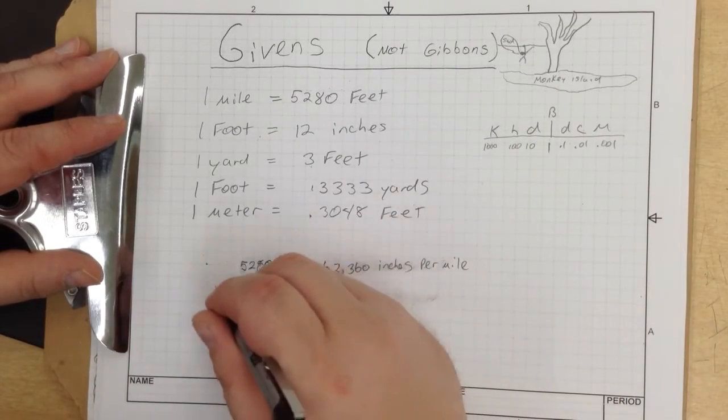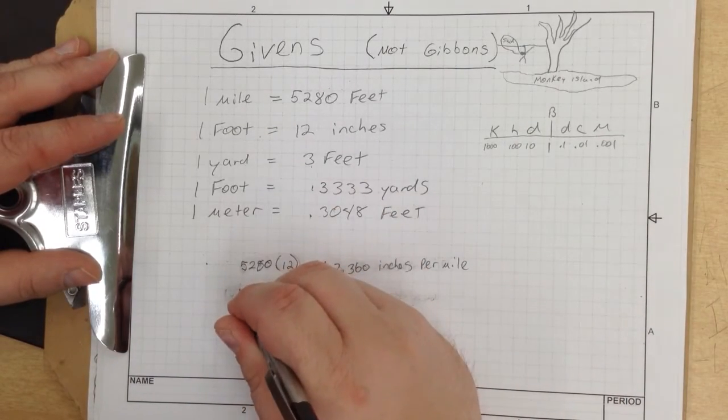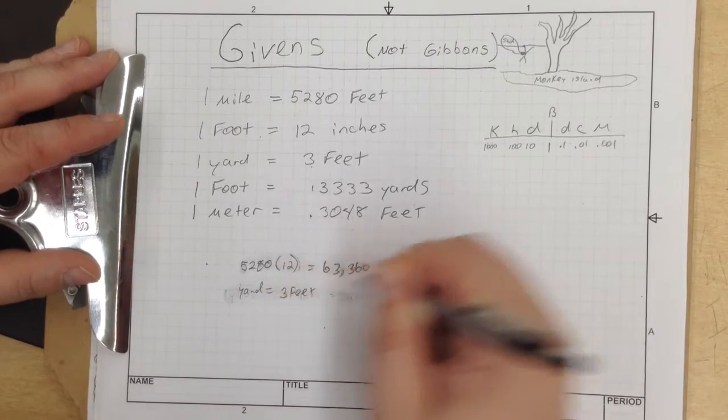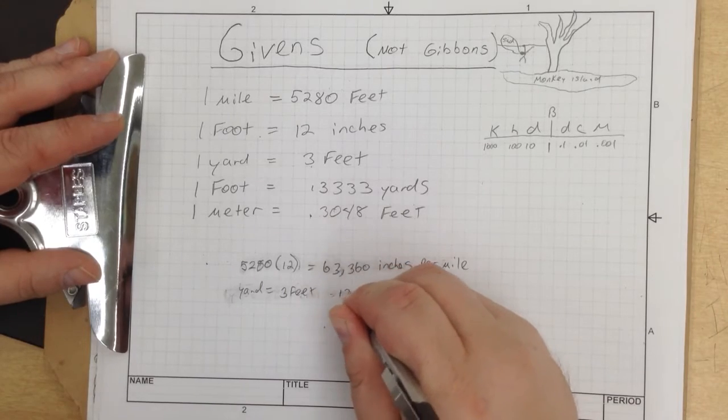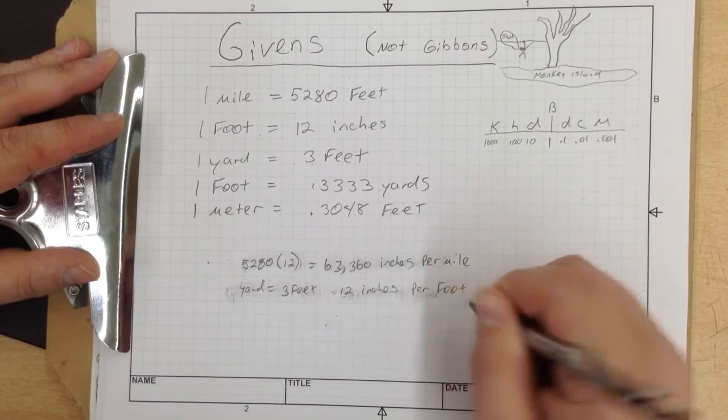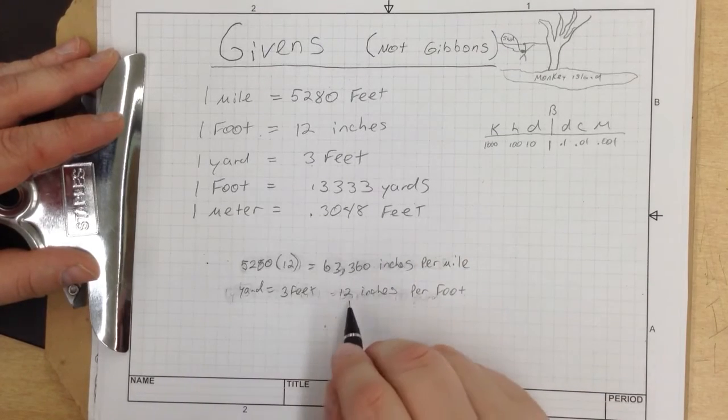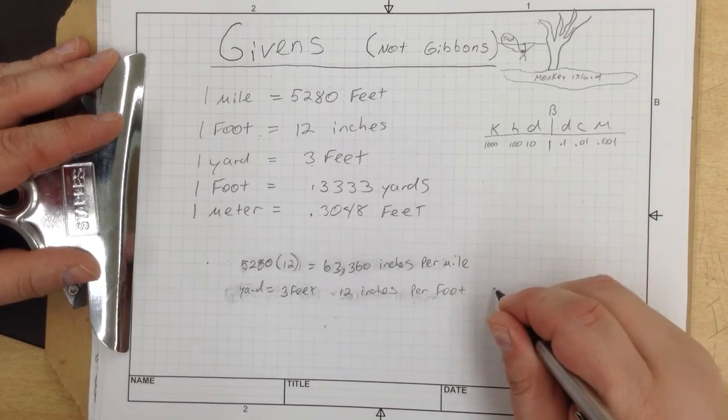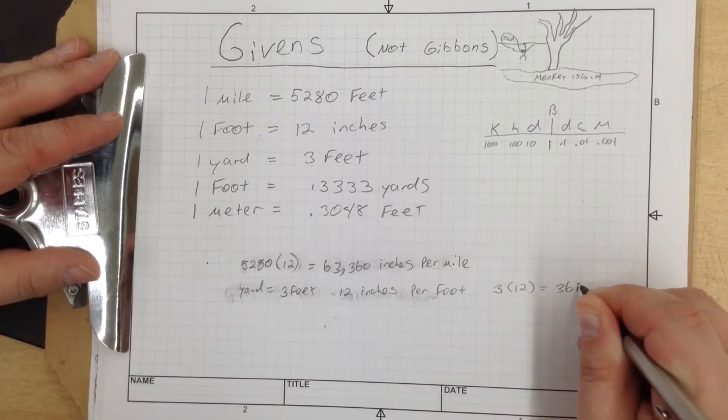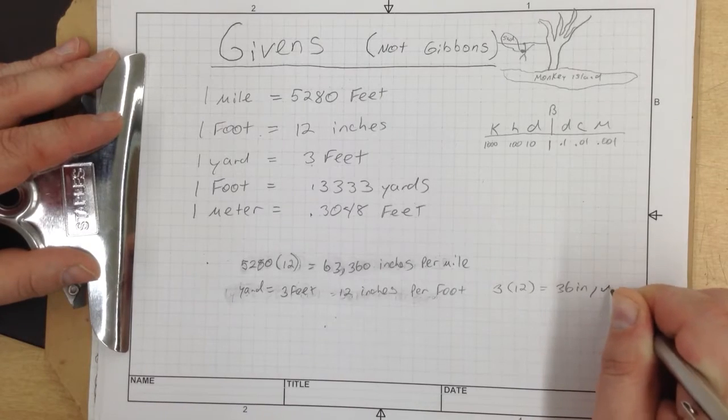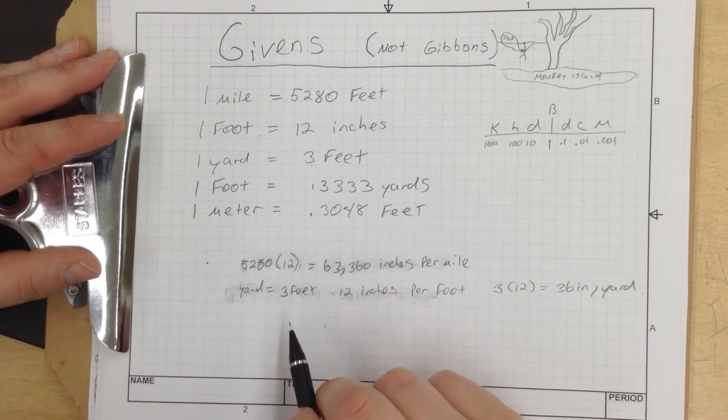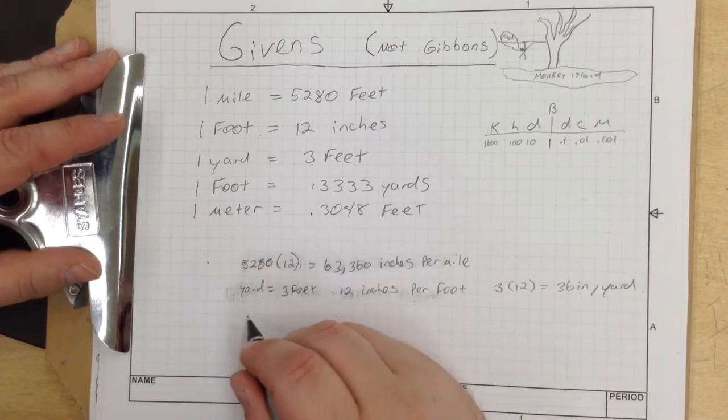Now let's figure out how many inches are in a yard. You know that a yard equals 3 feet and there's 12 inches per foot. So if you take 12 and multiply by 3, you have 3 times 12, and you are left with 36 inches per yard. Simple.